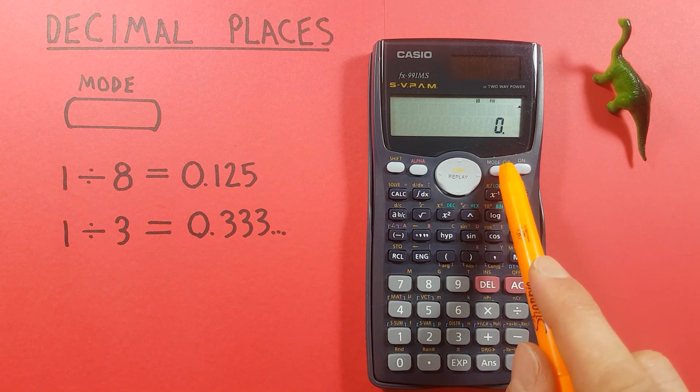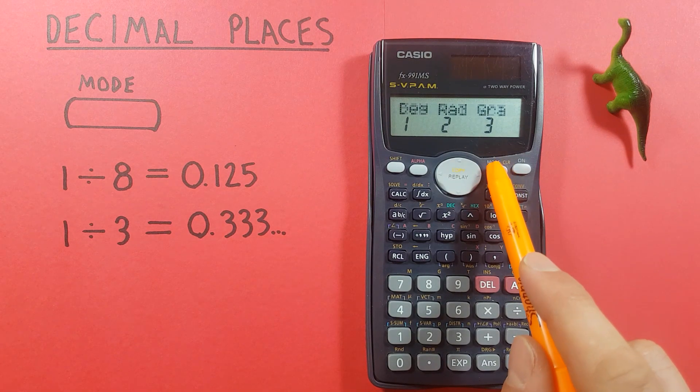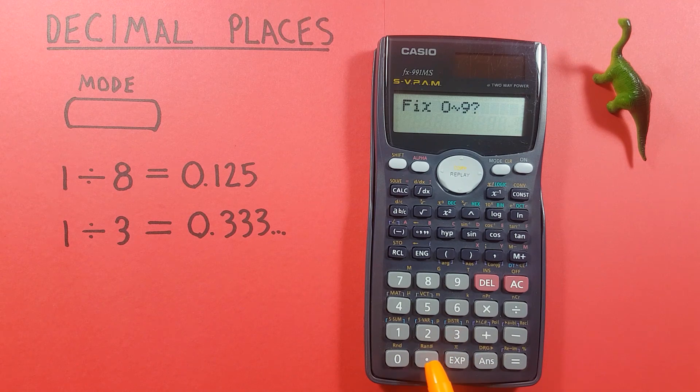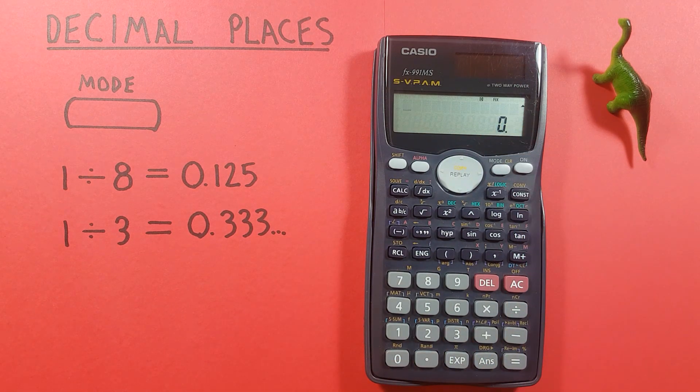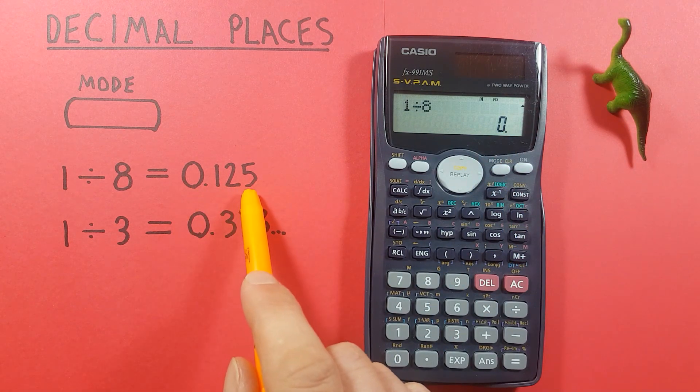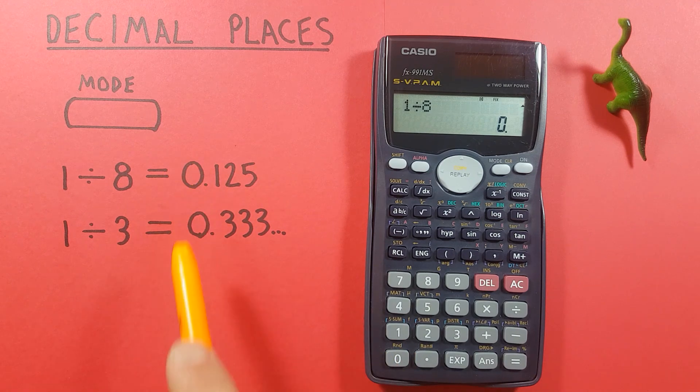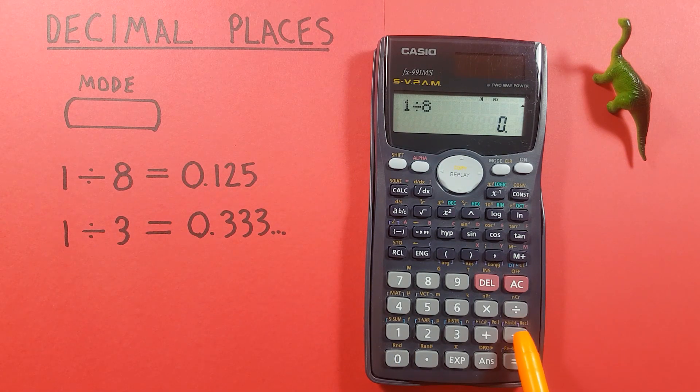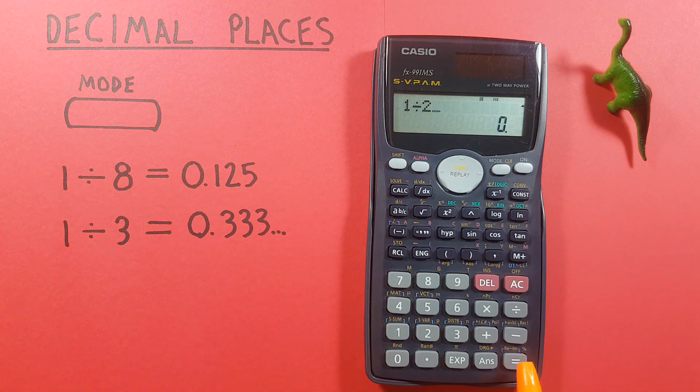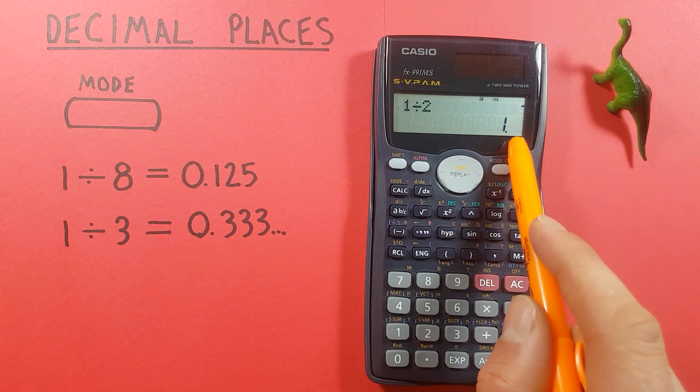Another example we can set to 0 decimal places. 0 there we go. Now if we do again 1 divided by 8 you see we get an answer of 0. That's because this 0.125 will not actually round up. But if we do let's say 1 divided by 2 which we know should give us 0.5 we get that rounded to 1.